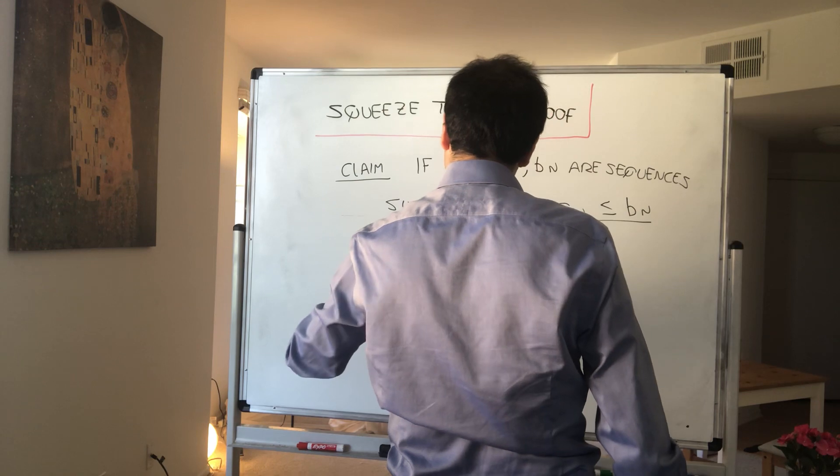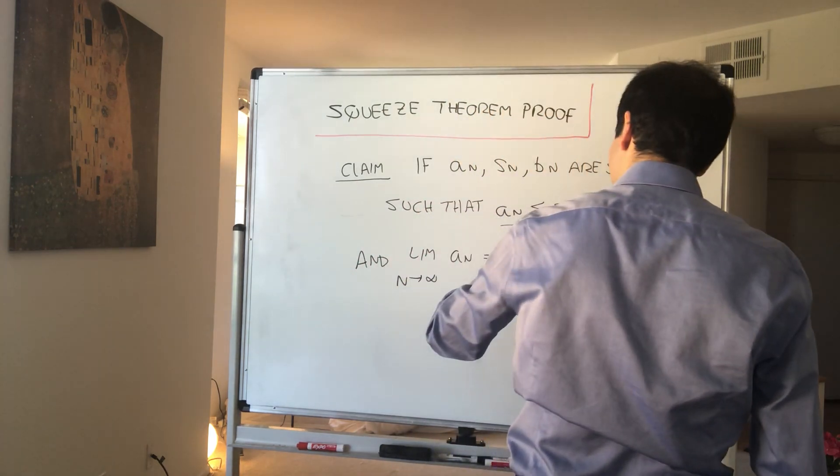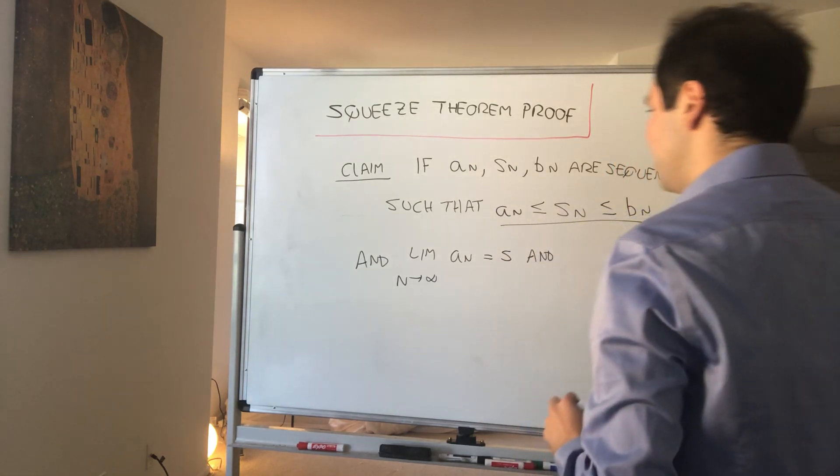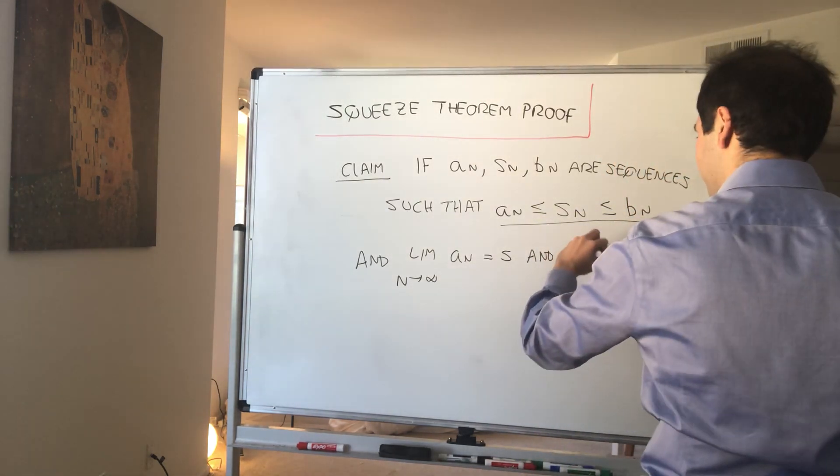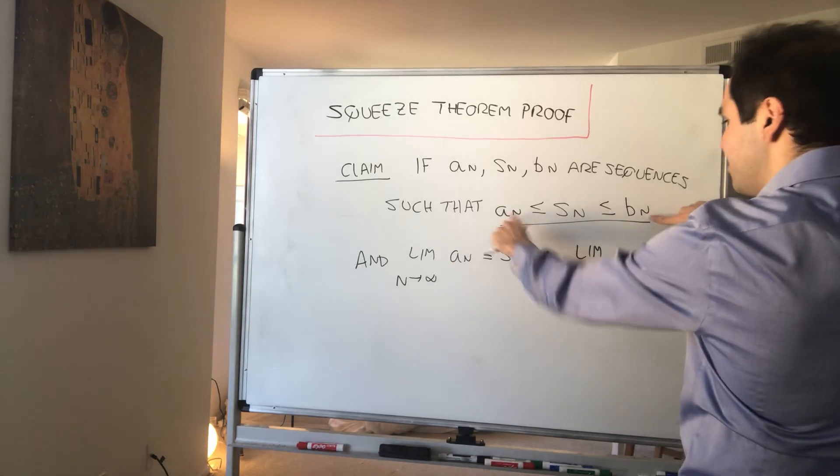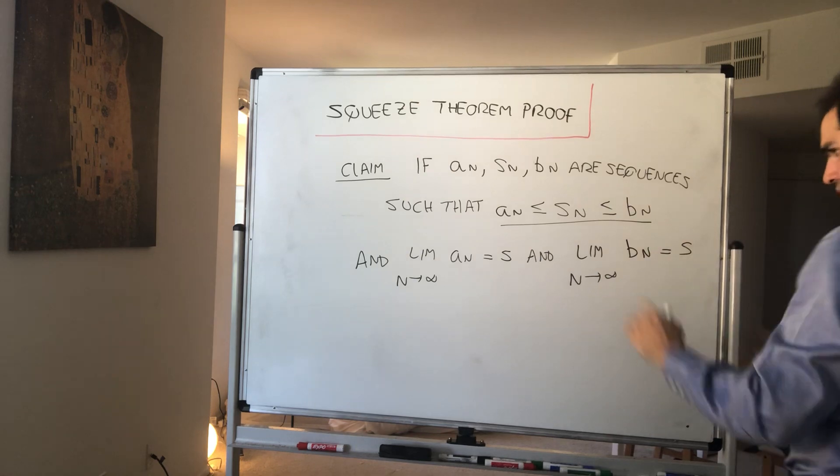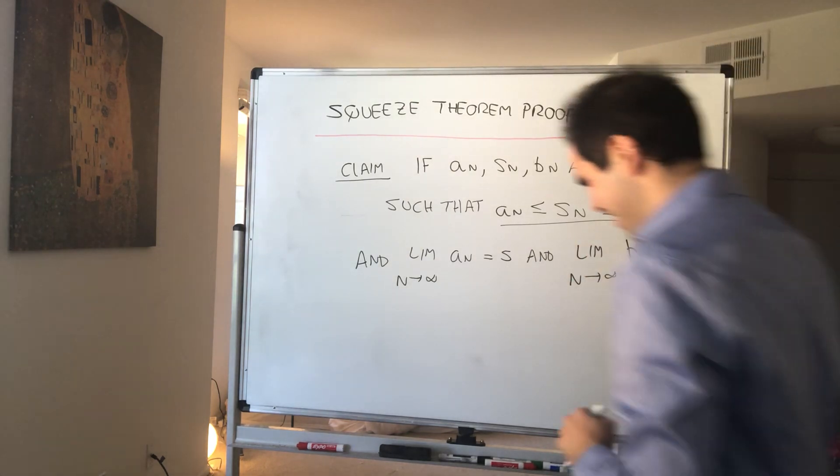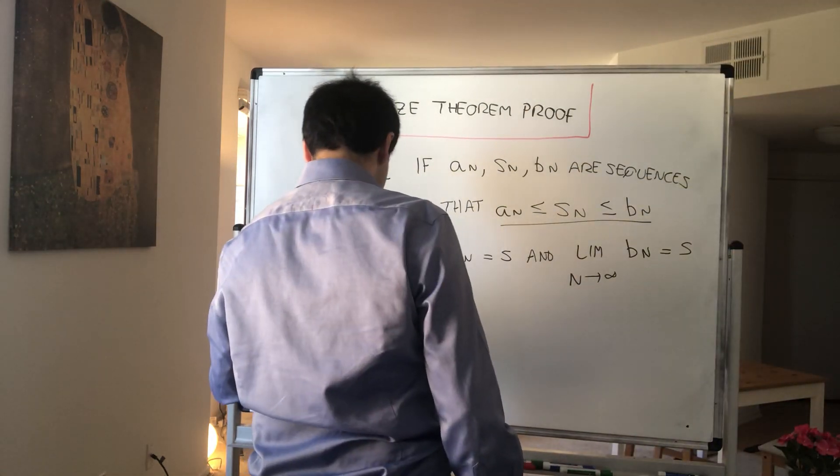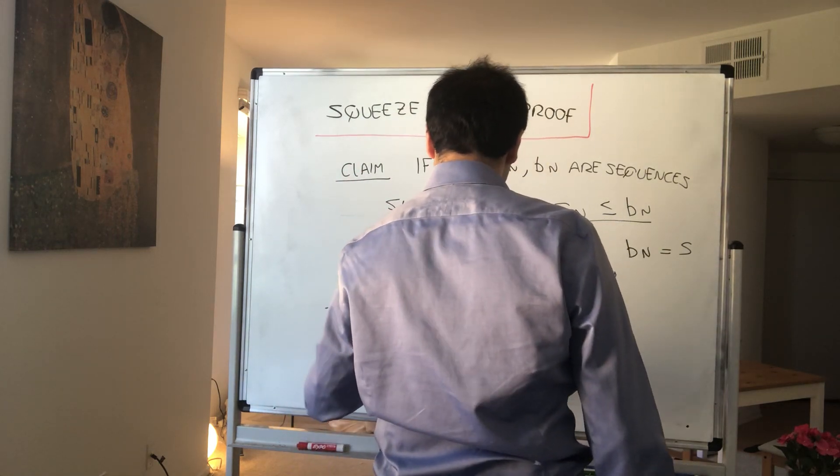and the limit as n goes to infinity of a_n equals s, which is the same as the limit of the bigger sequence. So if the smaller sequence converges to the same thing as the bigger sequence, and the limit is finite, then the middle sequence also converges to s.